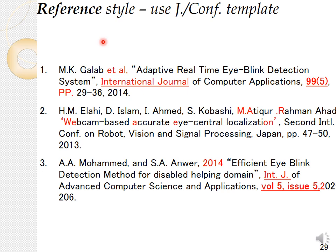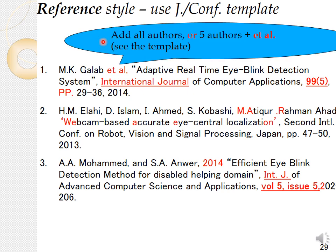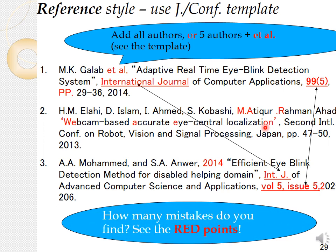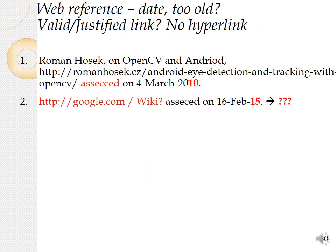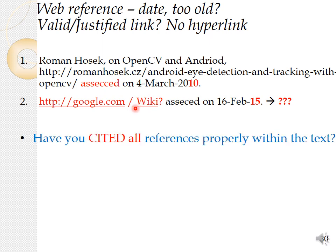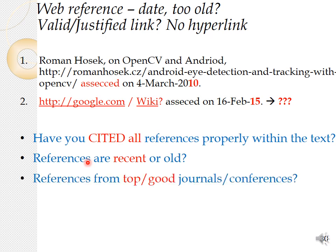For reference style, use the template of that conference or journal — it varies a lot. Normally, add all authors; if there are more than five or six, list the first five or six and then use 'et al.' — see the template. Make sure there is no mixing of styles, for example writing 'volume' in full in one reference but 'vol.' in another, or placing the year in different positions. When you use a web reference, make sure it is not too old, and Google or Wikipedia are not suitable references. Make sure all references are cited properly with recent references from good journals or conferences.